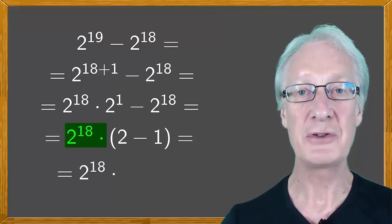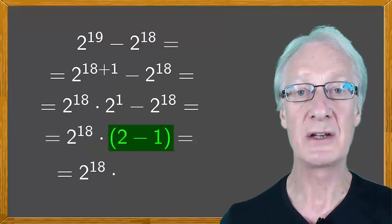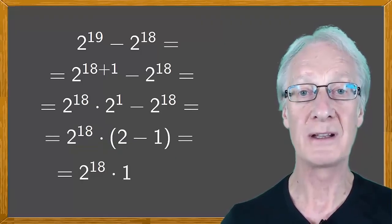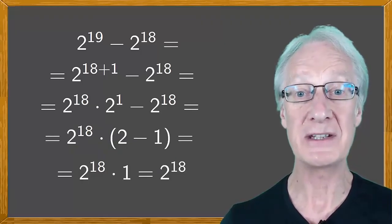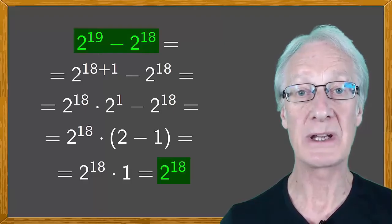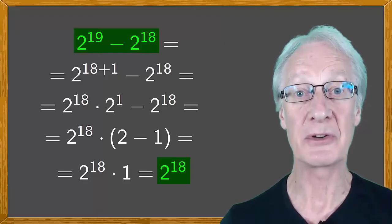So, we have 2 to the 18 times 2 minus 1, which is 1, leaving us with 2 to the 18. And we get a single power as a result.